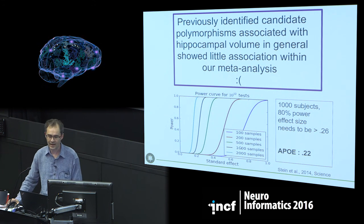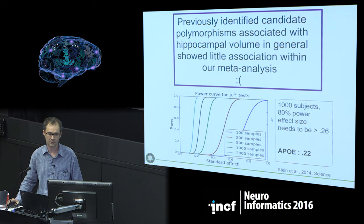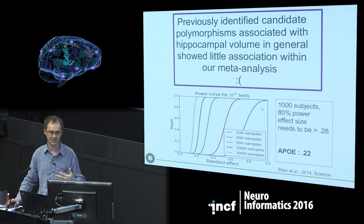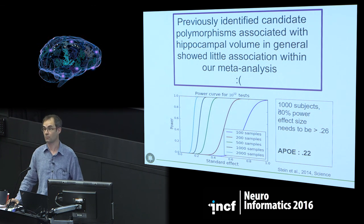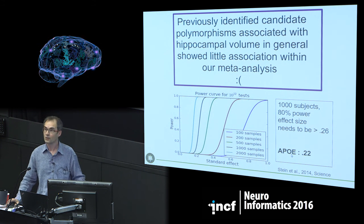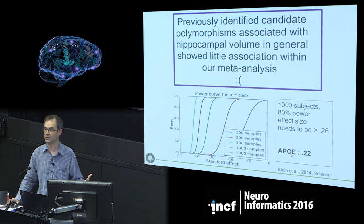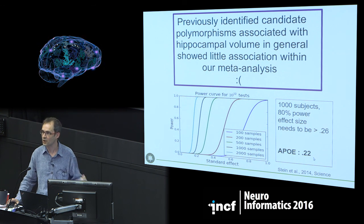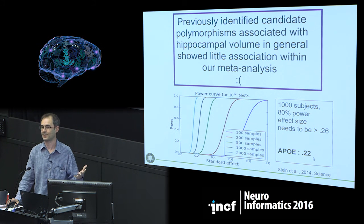This pattern has been seen again and again. Jason Stein's Science paper on hippocampal volume found he could not replicate any of the SNPs that had been found in the literature. The problem is statistical power. The biggest effect size found in this field is APOE for Alzheimer's disease, and that effect size in terms of Cohen's d is 0.2.